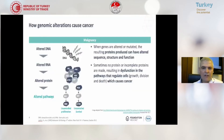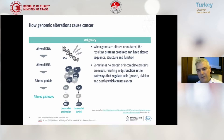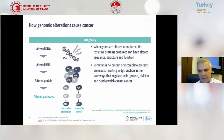How do genomic alterations cause cancer? When genes are altered or mutated, the resulting proteins produced can have altered sequence, structure, or function. Sometimes no protein or incomplete proteins are made, resulting in dysfunction in the pathways that regulate cell growth, division, and death, which causes cancer.